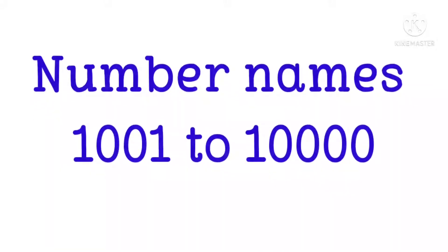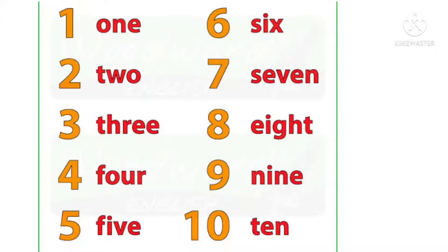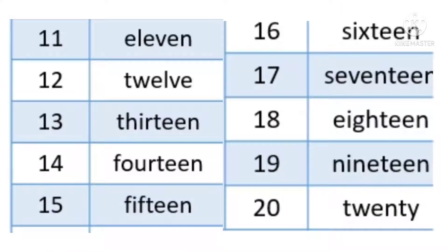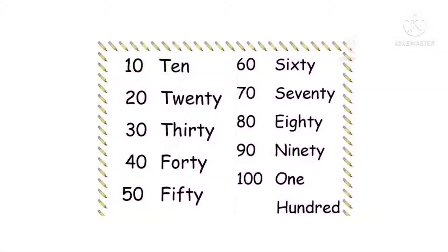Hello everyone. Today we are going to learn about number names from one thousand to ten thousand. Before we write the number names, we just need to know some spellings of numbers — one to ten, eleven to twenty, counting tens from ten to hundred, and next is thousand. The spelling of thousand is T-H-O-U-S-A-N-D. Thousand.